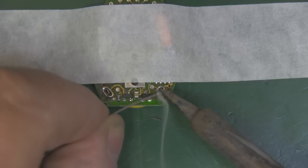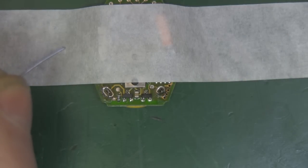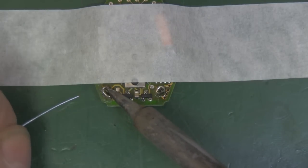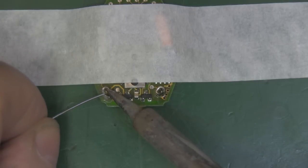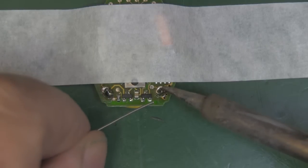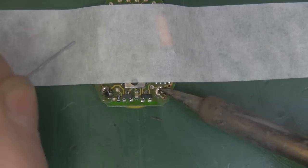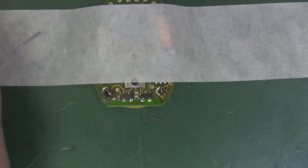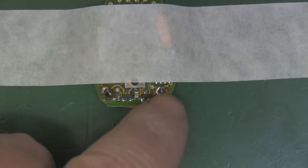Solder that leg into position. Same on the other side, get some heat in there and get the solder to flow, put a little bit more on here. That's soldered in place, a little bit of a gap there but the leg is soldered on so I'm not too worried about that.